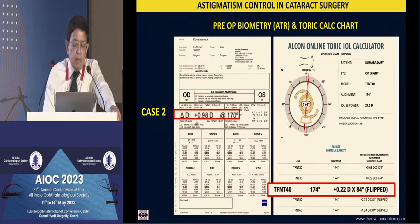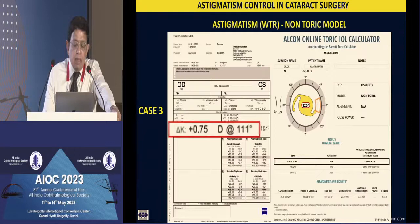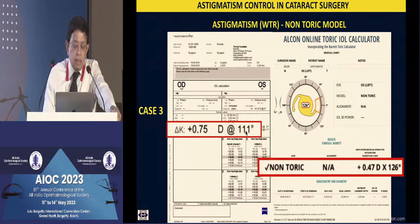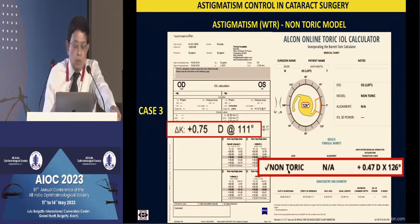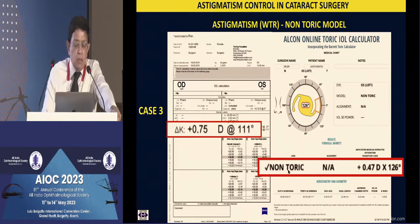The axis is extremely important. With 0.98 diopters of against-the-rule astigmatism the calculator shows a T4 IOL is needed, but with 0.75 diopters of with-the-rule astigmatism the calculator shows a non-toric IOL is what is needed. That is why we use the Barrett Toric Calculator as our go-to formula even before Barrett Universal 2 — so that we counsel the patient appropriately right from the start about whether they need a toric or non-toric lens.